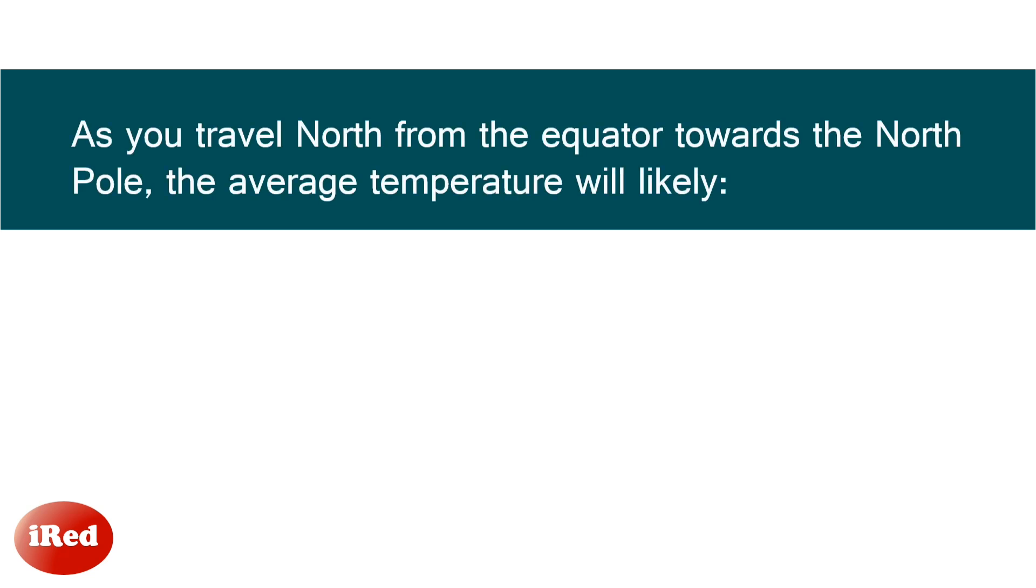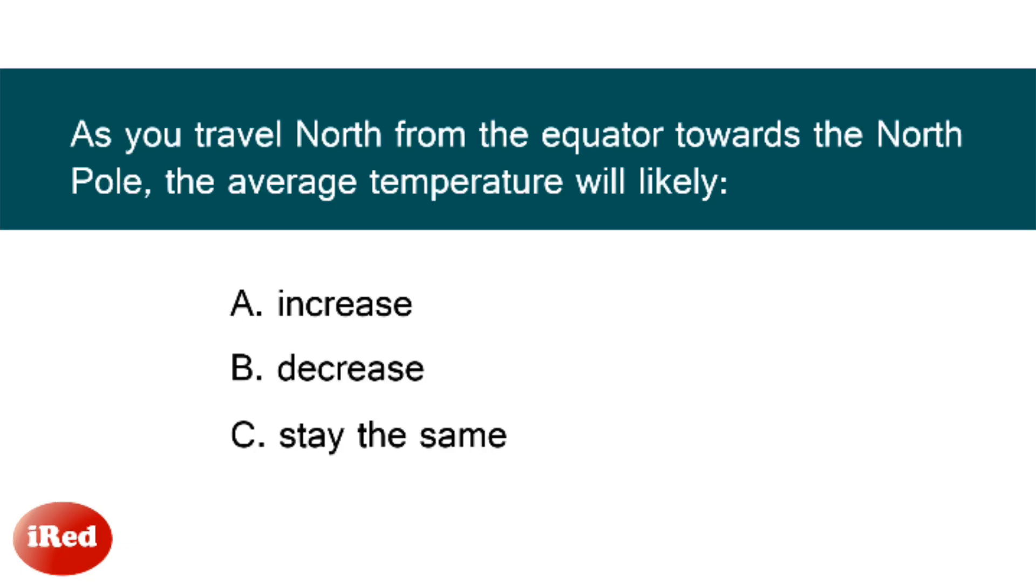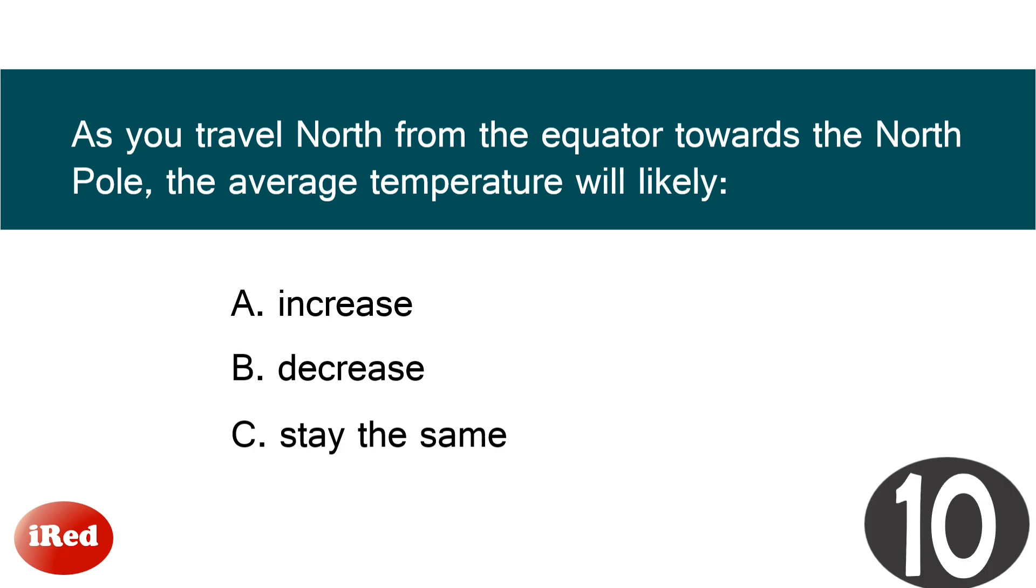As you travel north from the equator towards the North Pole, the average temperature will likely: Letter A increase, Letter B decrease, or Letter C stay the same. The correct answer is Letter B decrease.